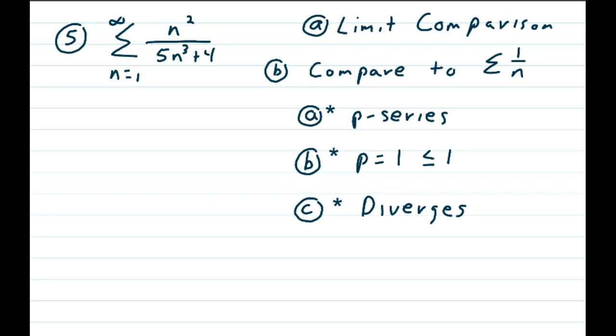Where the power is 1, which is less than or equal to 1, and 1 over n diverges. So we're looking at the series that it's similar to. We're comparing it to the p-series 1 over n.